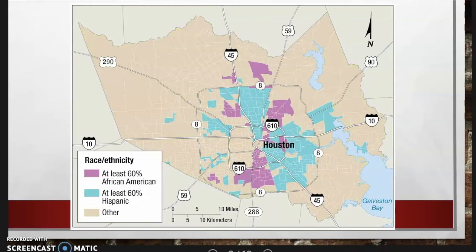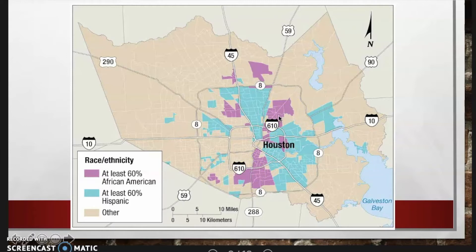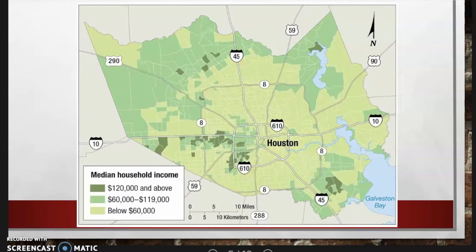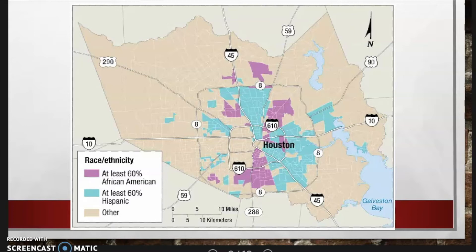We can also see the multiple nuclei model in Houston by looking at the distribution of minorities. Hispanics occupy nodes to the north and to the southeast of downtown, while African Americans occupy nodes to the south and to the northeast. So one city can actually show variations of urban models to illustrate things from race and ethnicity to median household income and new housing — concentric zone, sector model, and multiple nuclei model all in Houston.